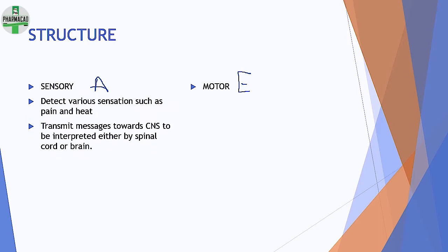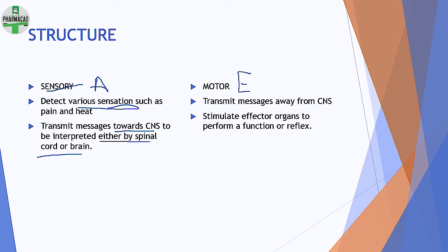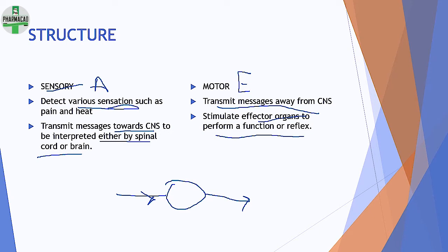Sensory, as the word suggests, detects sensations such as pain and heat, and transmits messages towards the CNS to be interpreted either by the spinal cord or brain. Motor transmits messages away from the CNS, stimulating effector organs to perform a function or reflex. You can get a question on differentiation between sensory and motor, so these are the most important points.